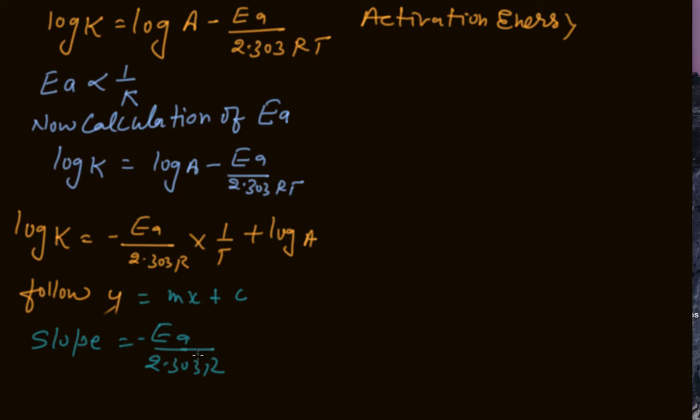So then what is Ea? Ea becomes minus 2.303 R multiplied with slope, and if we plot the graph it is coming in this way.